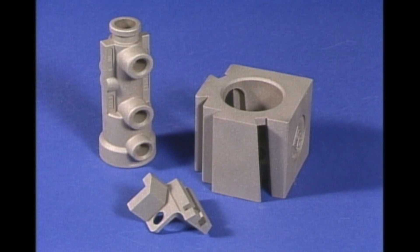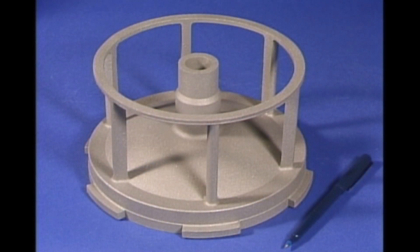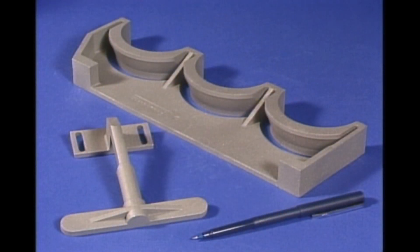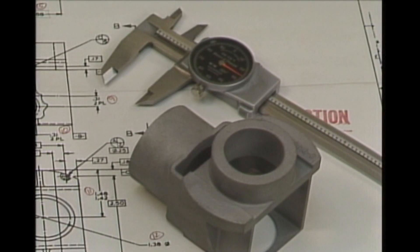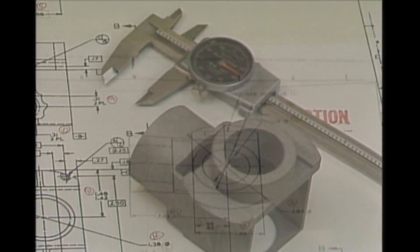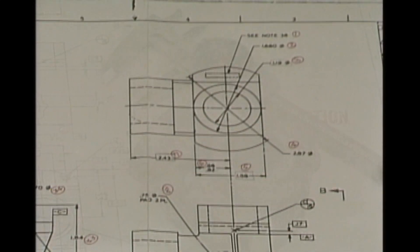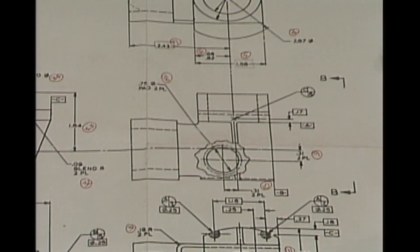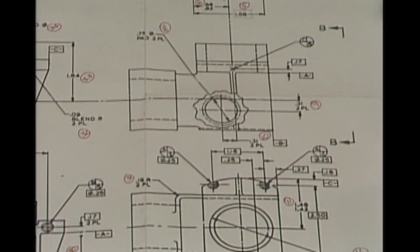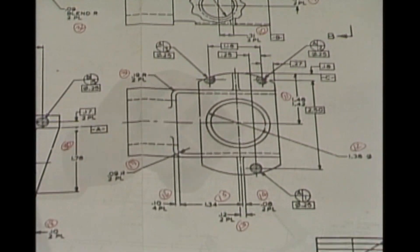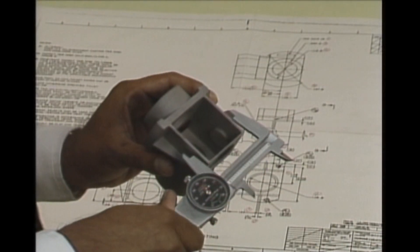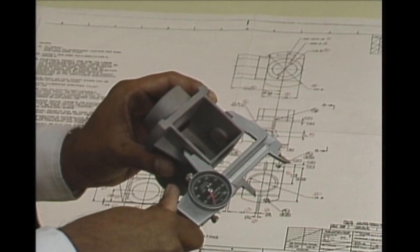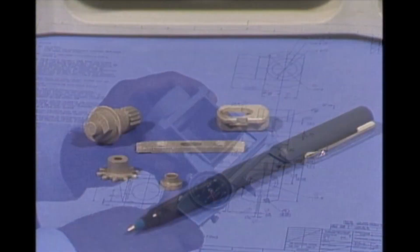Machining is frequently reduced or eliminated. Multiple part assembly can also be eliminated because investment casting combines the best of several metalworking processes. Investment casting is the designer's dream. It offers infinite alloy choices, new design parameters, thin walls, better finishes, internal cores, and more. Restrictions are few.